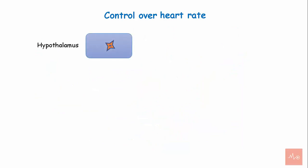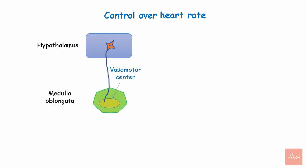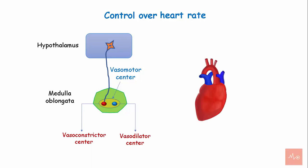Control over the heart rate. The hypothalamus controls the heart rate by its action on the vasomotor center in the medulla oblongata. The medulla has a vasoconstrictor and a vasodilator center. When the lateral and posterior nuclei of the hypothalamus are stimulated, the vasoconstrictor area in the medulla sends a signal to the heart and there is an increase in the heart rate.